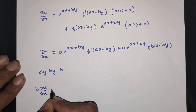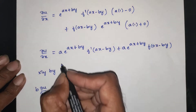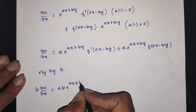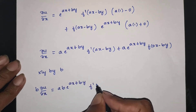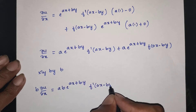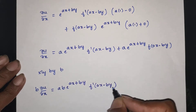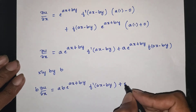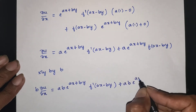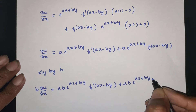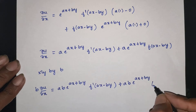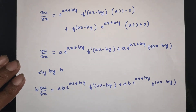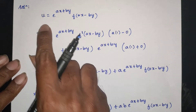b into ∂u/∂x is equal to ab·e power ax plus by, f dash of ax minus by, plus ab·e power ax plus by, f of ax minus by.